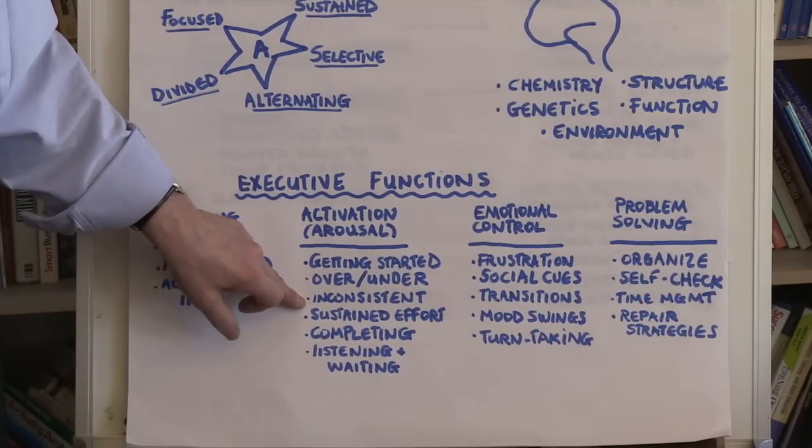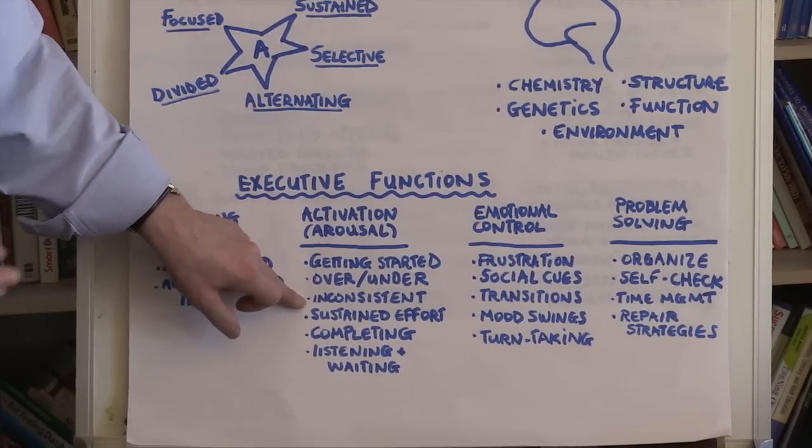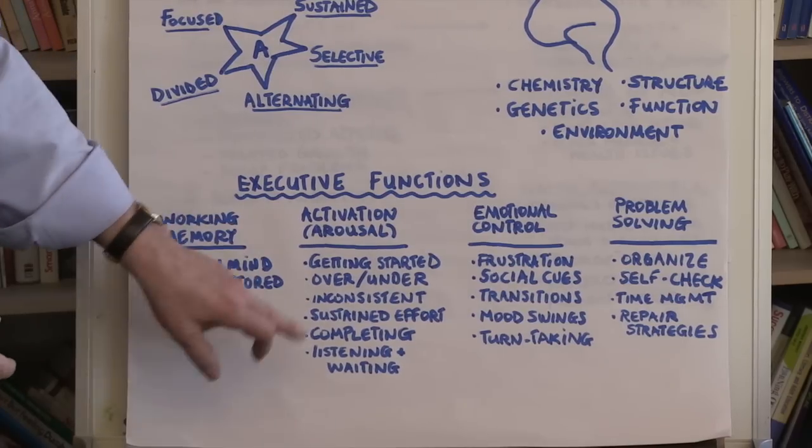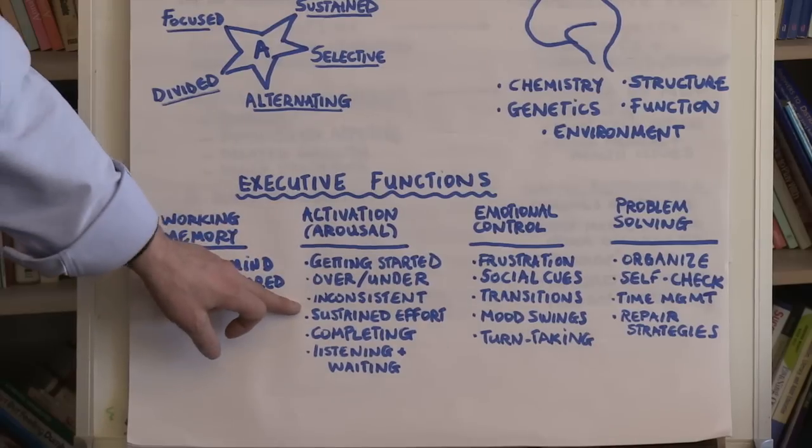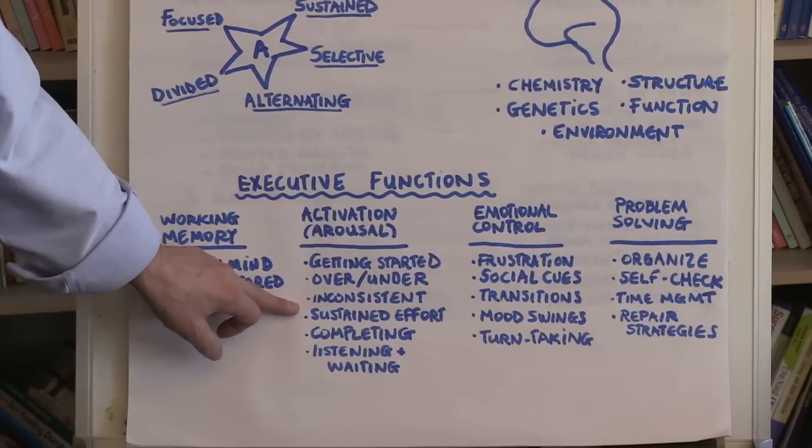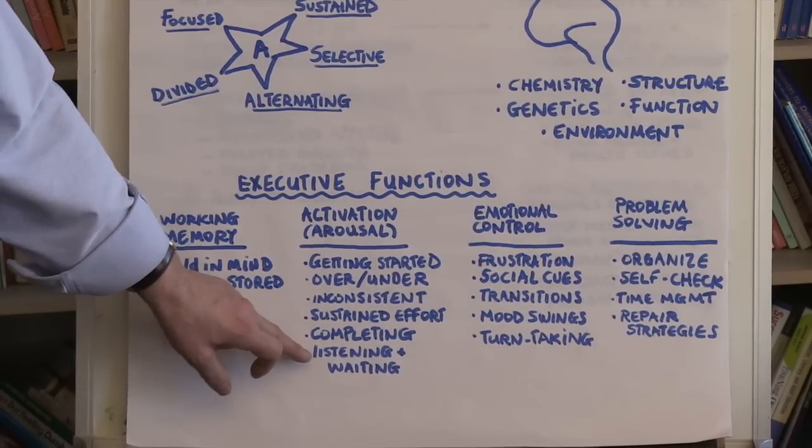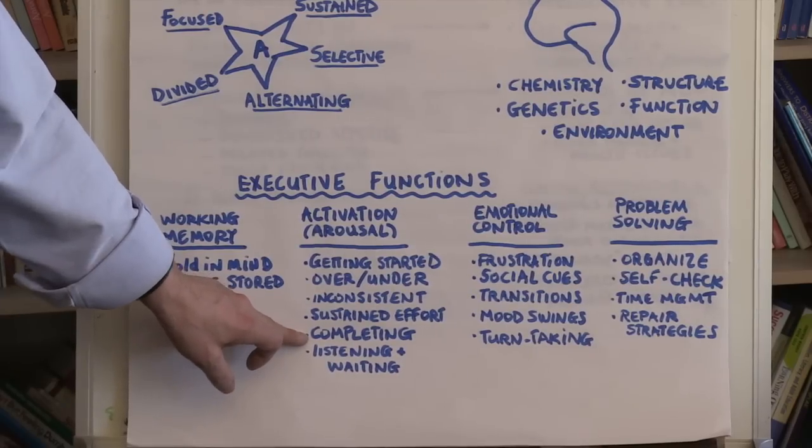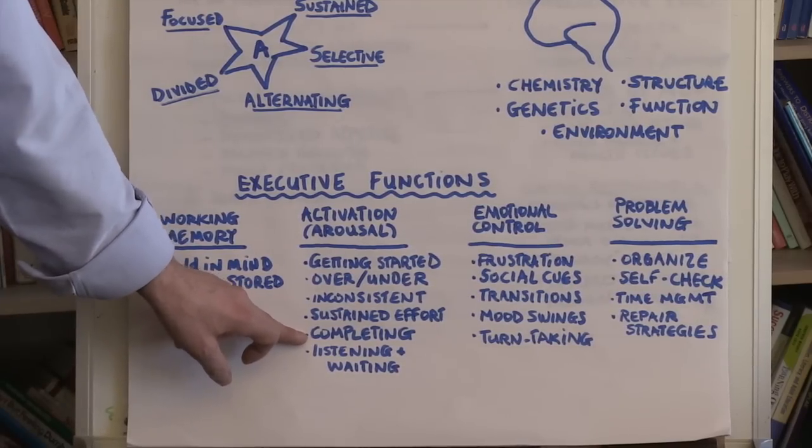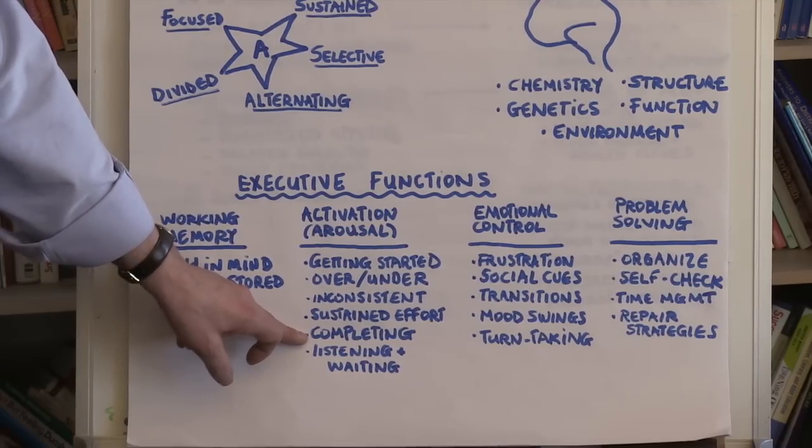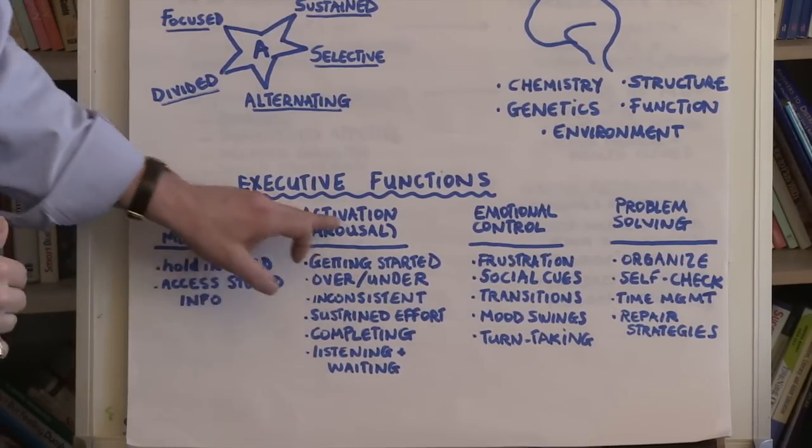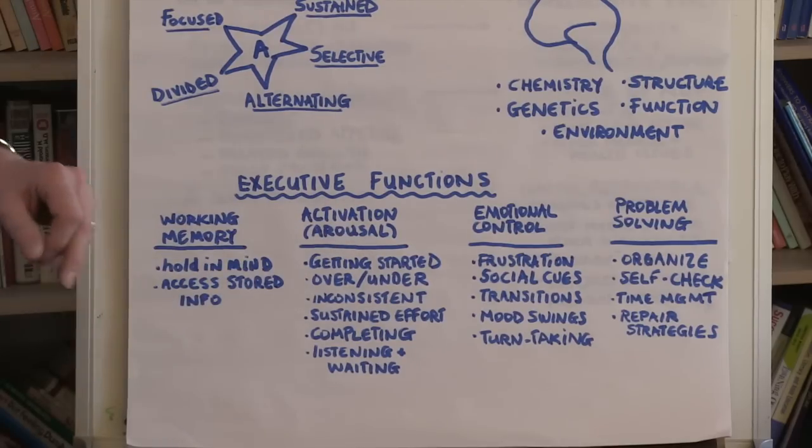They may be inconsistent. They may be able to do something sometimes, but need prompting and urging and modeling other times. It's often difficult for individuals with ADHD to sustain the effort needed to complete tasks. And they often don't always complete those tasks in ways that follow instructions or start it in one place and end at a desired outcome. And they often, very often, have difficulty listening and waiting, taking turns.